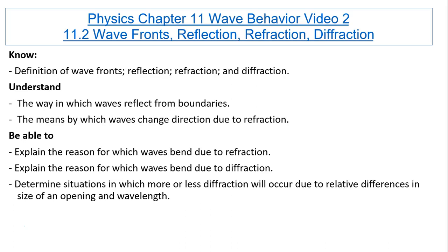The objectives are: know the definition of wavefronts, reflection, refraction, and diffraction. Understand the way in which waves reflect from boundaries. Understand the means by which waves change direction due to refraction, and be able to explain the reason for which waves bend due to refraction. Be able to explain the reason for which waves bend due to diffraction, and determine situations in which more or less diffraction will occur due to relative differences in the size of an opening and wavelength.